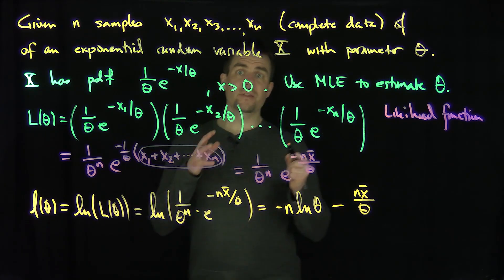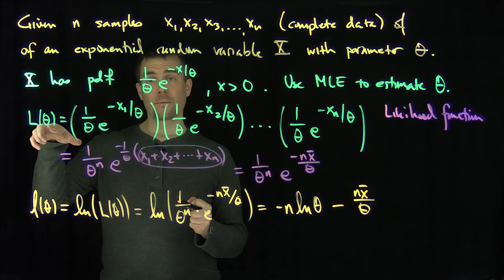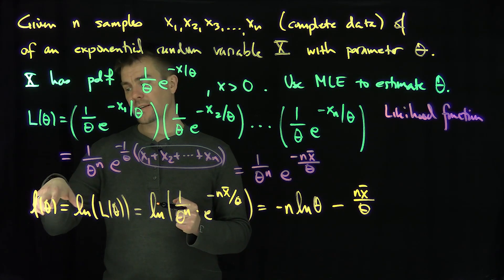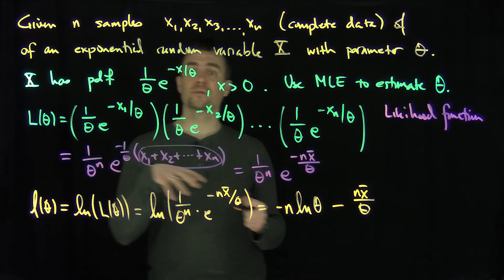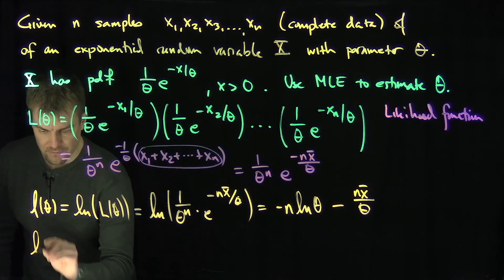And now, I know that in order to find the maximum of this likelihood function, the value of theta which maximizes the likelihood function, it's exactly the same as finding the value of theta which maximizes the log likelihood. That just follows from logarithmic differentiation. So let me compute l prime of theta.